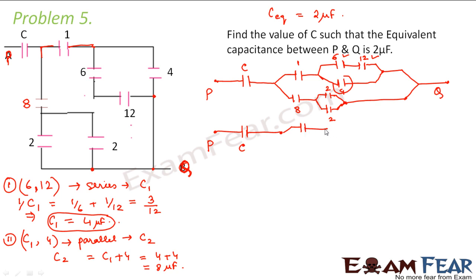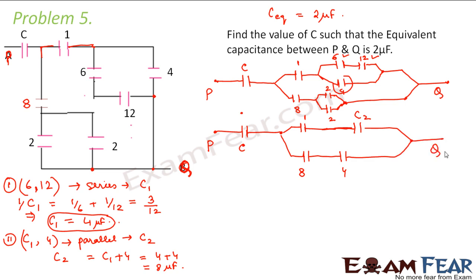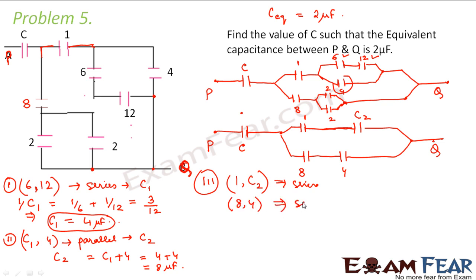So now if I draw the circuit: this was 1, and after 1, instead of those three capacitors you have C2, then you have Q. So this is C, this is 1, and from here you have 8, and after 8 you have 2 and 2 in parallel. So 2 and 2 in parallel — their equivalent capacitance would be 4 — and then it goes back to Q. So now you have 1 and C2 in series, and 8 and 4 in series.